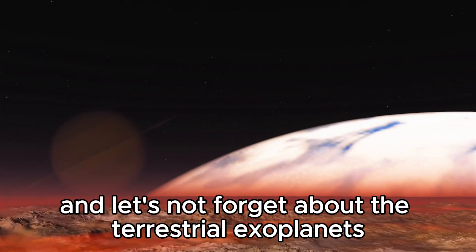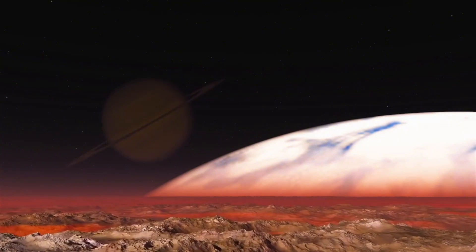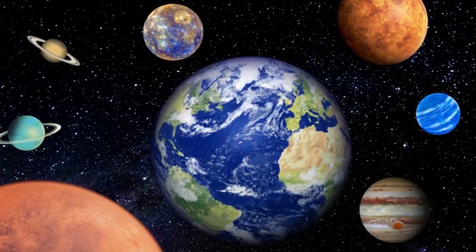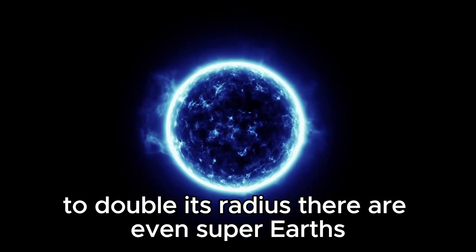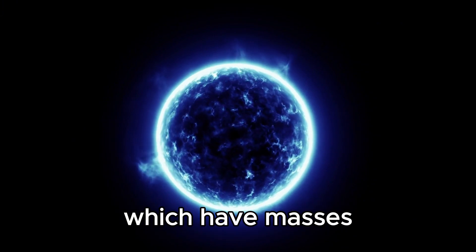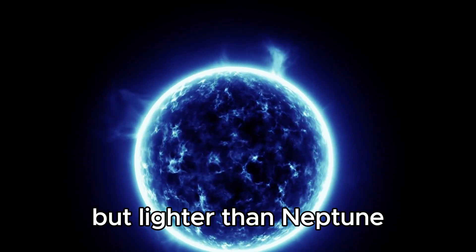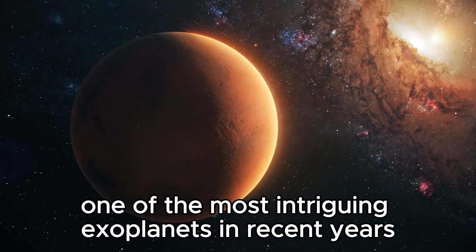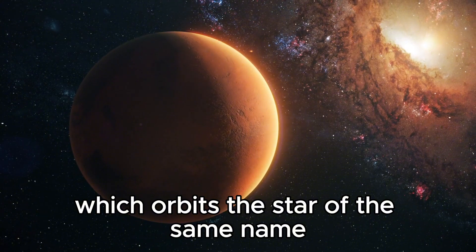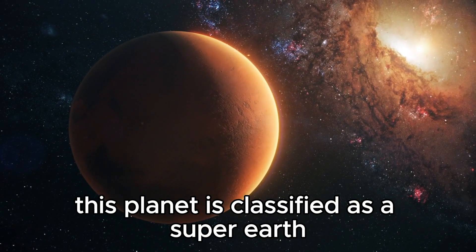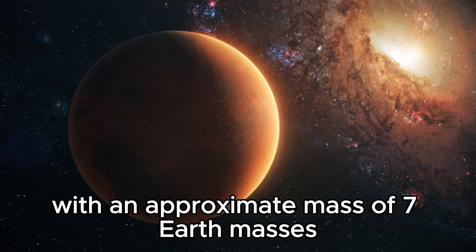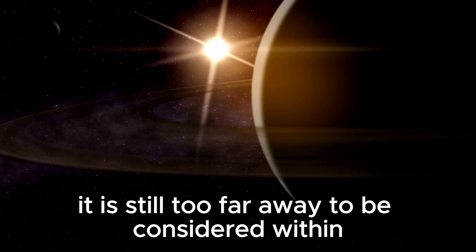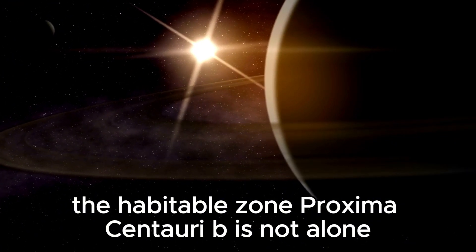And let's not forget about the terrestrial exoplanets, which resemble our own planet Earth. These planets come in various sizes, ranging from smaller than our world to double its radius. There are even super-Earths, which have masses greater than twice that of our planet but lighter than Neptune. One of the most intriguing exoplanets in recent years is Proxima Centauri b, which orbits the star of the same name. This planet is classified as a super-Earth with an approximate mass of seven Earth masses. Although it is close to its host star, it is still too far away to be considered within the habitable zone.